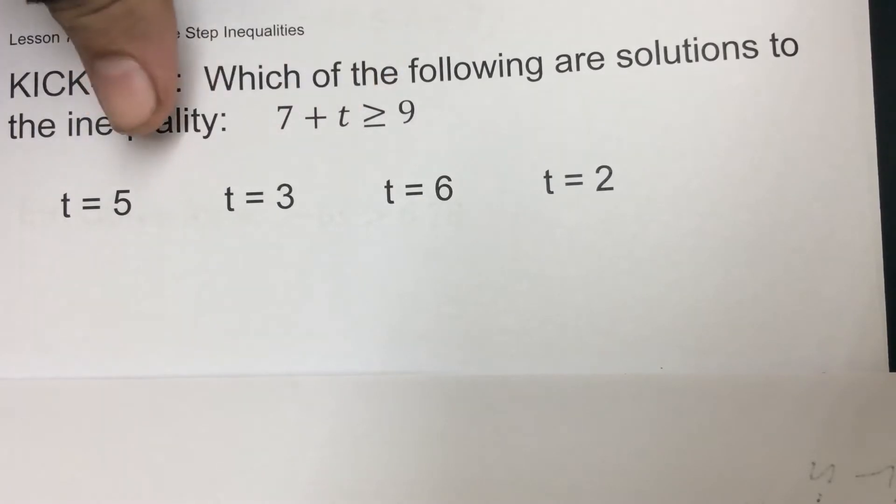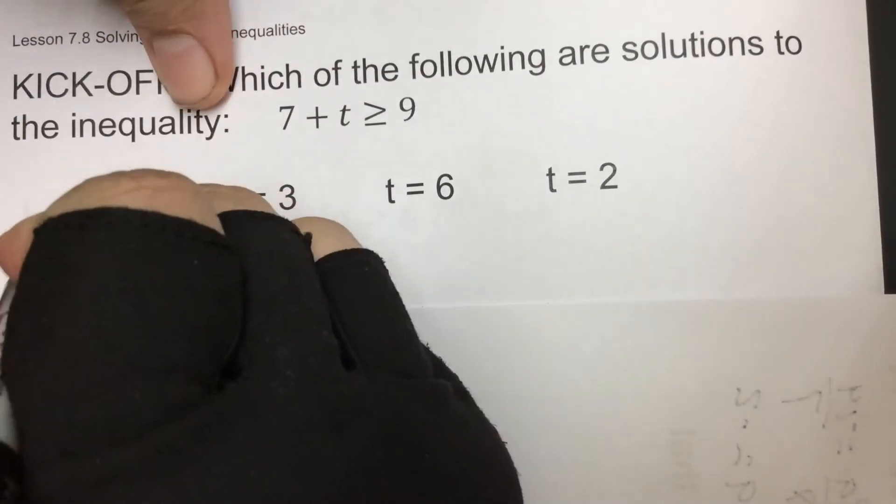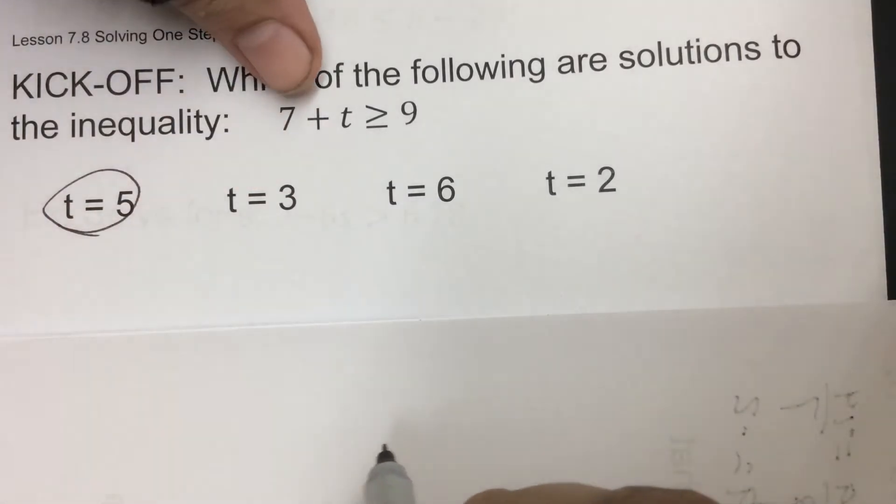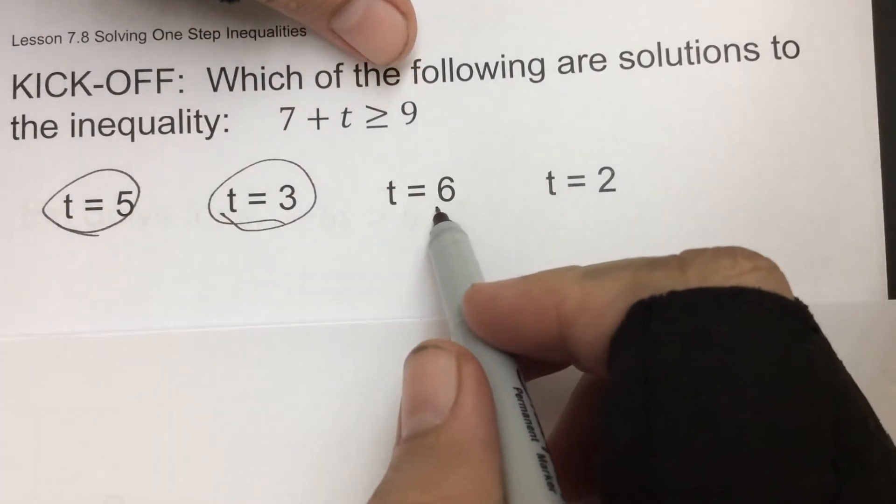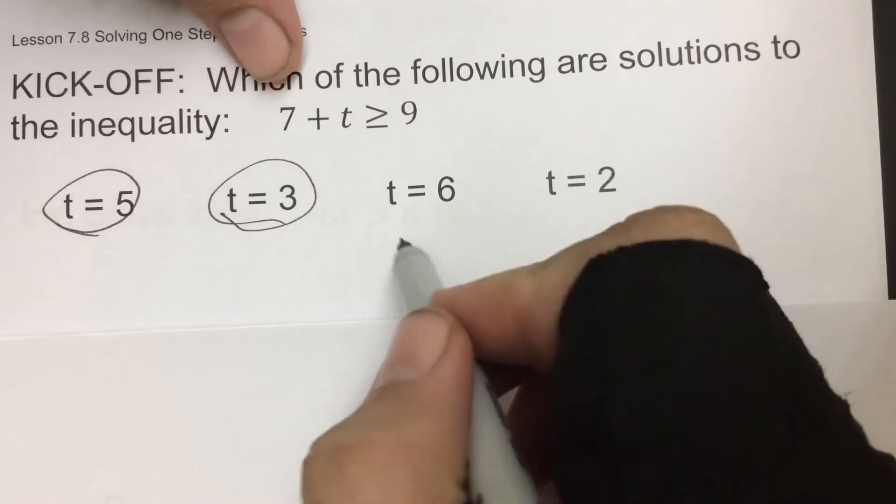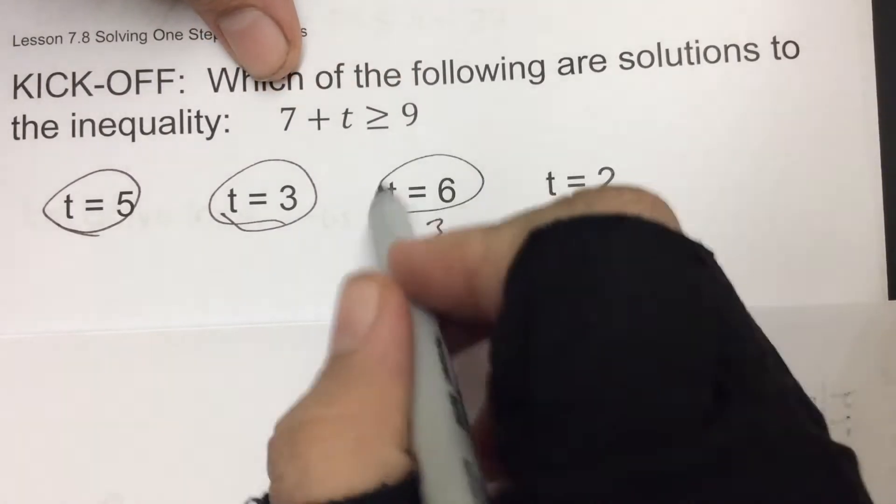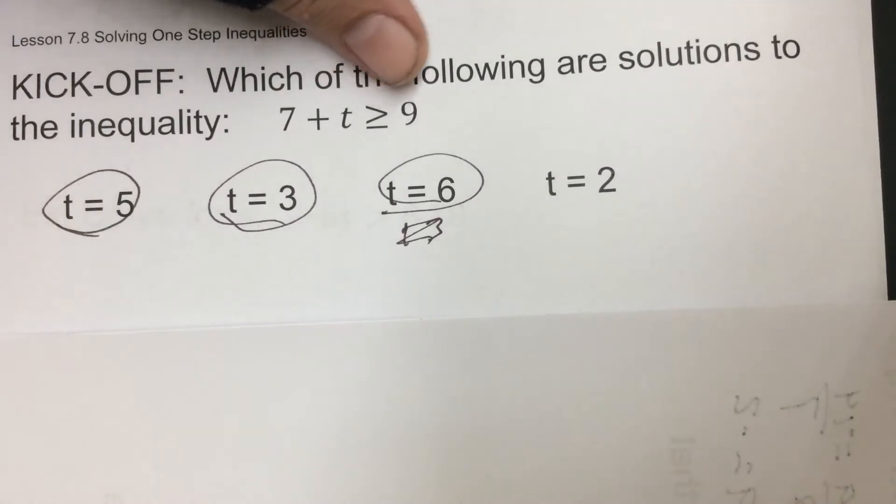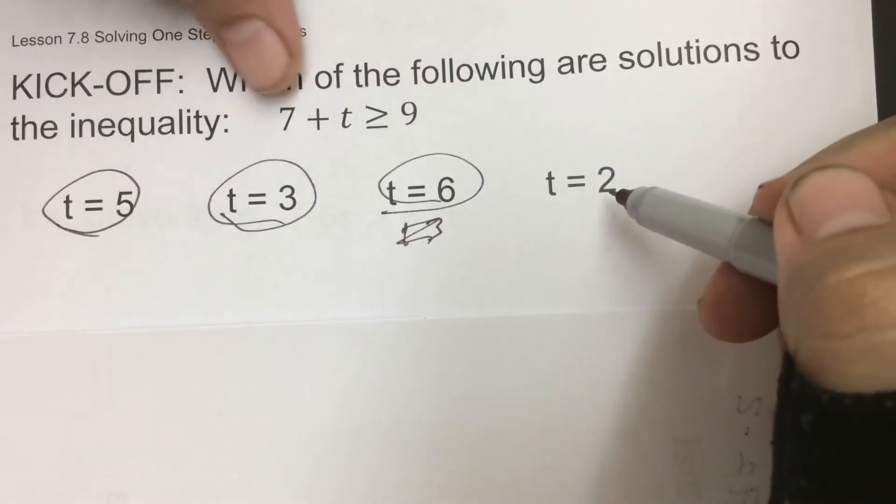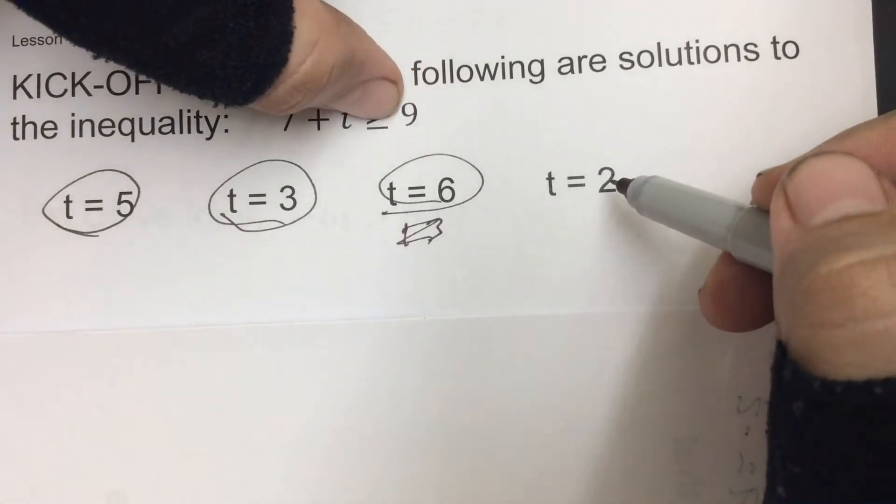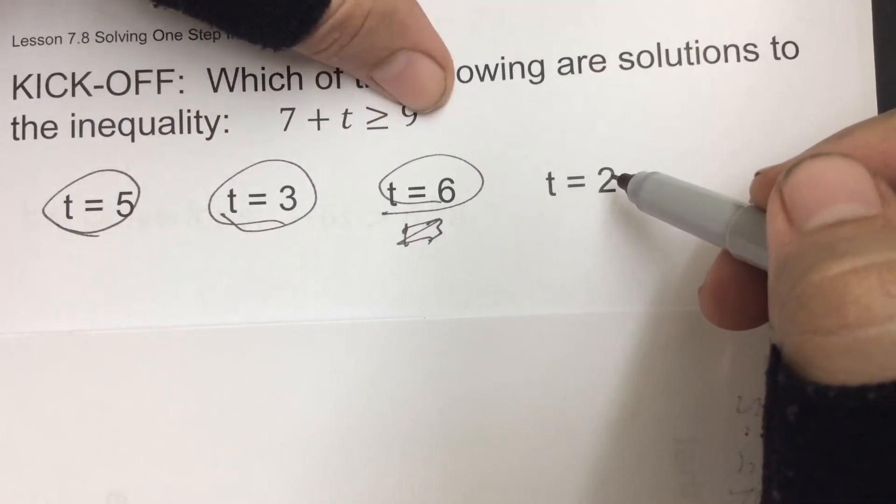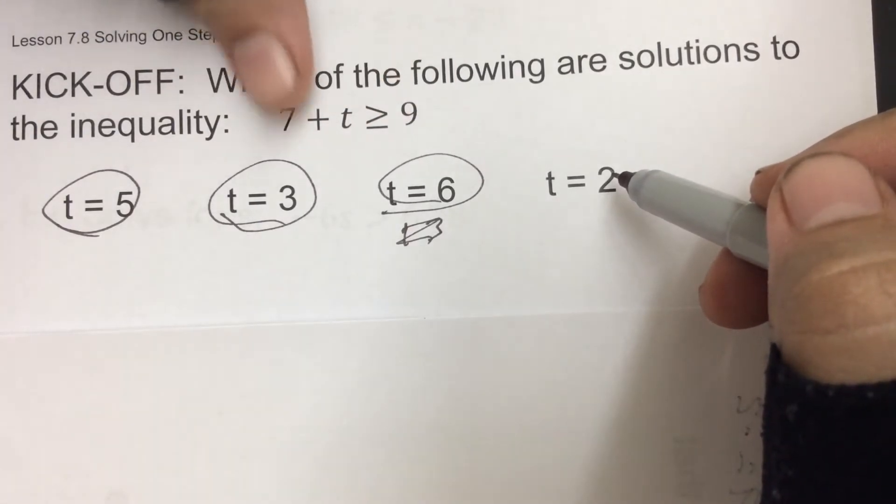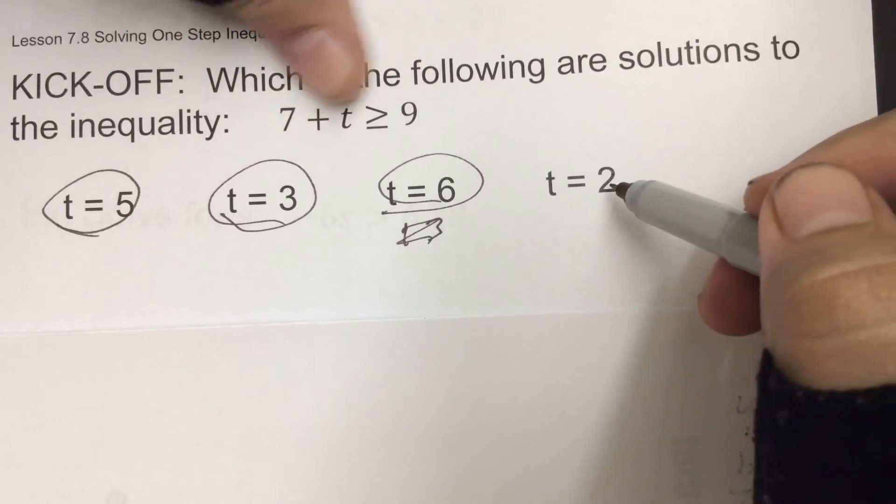So 7 plus 5 is 12, which is bigger, that works. 3 in there: 3 plus 7 is 10, that also works. t equals 6, so 6 and 7 would be 13, which also works. Because again, we're trying to be bigger than or equal to 9. Now 7 plus 2 is 9, but remember that bar beneath means it could be equal or it could be bigger than, because again we're pointing to the small number eating the bigger one. So we need this side to be bigger. 2 plus 7 is 9, which is equal, so that works as well.